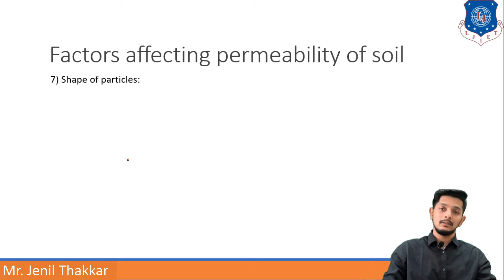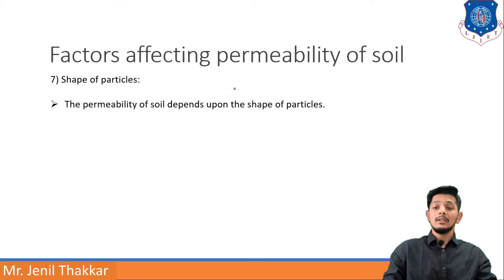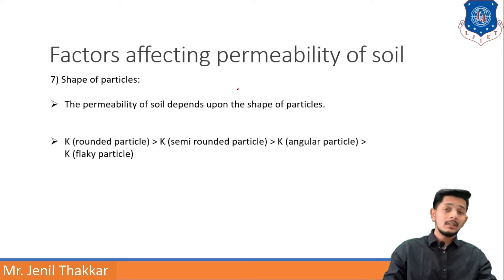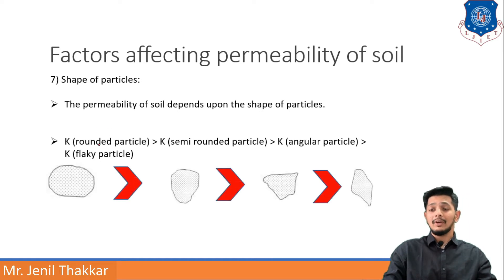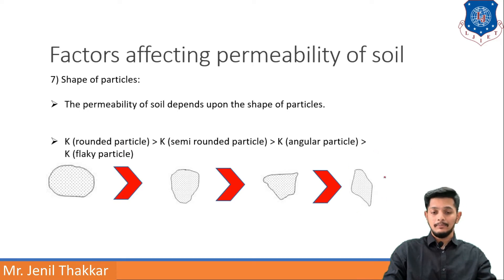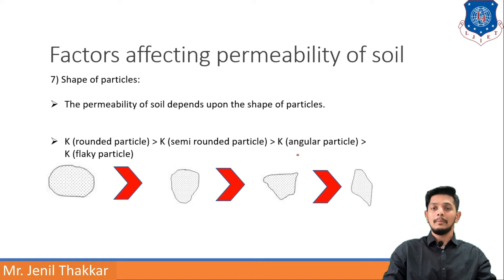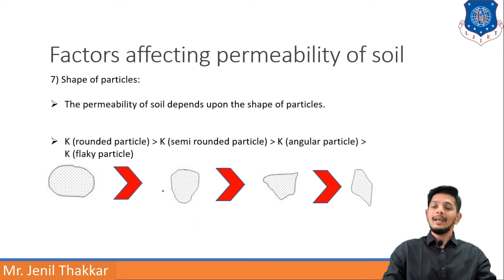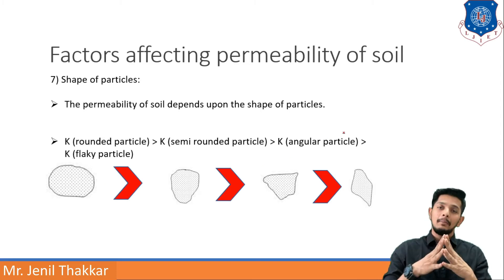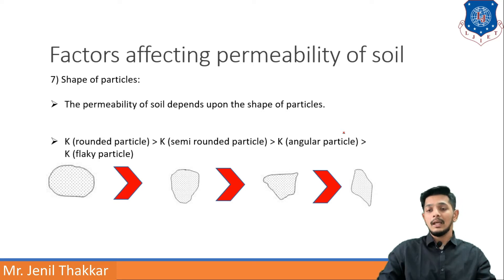The seventh factor is the shape of particles. Permeability of rounded particles is much greater than semi-rounded, angular, and flaky particles. From least to most permeability: flaky particles have the least permeability, then angular, then semi-rounded, and rounded particles have the maximum permeability.